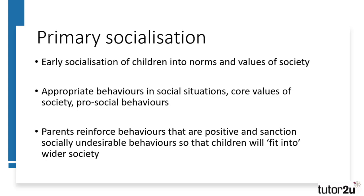Parsons' ideas of primary socialisation were not too different to Murdoch's function of education. It involved the early socialisation of children into the appropriate norms and values of society. Children would be taught how to act in specific social situations, such as at the dining table or in the presence of adults. They would also be taught the core values of society, what functionalists refer to as the value consensus, essentially pro-social behaviours that would enable them to fit into society and not become deviant. Parents would reinforce these behaviours and sanction behaviours that were undesirable, thus allowing their children to grow up well-adjusted to society.